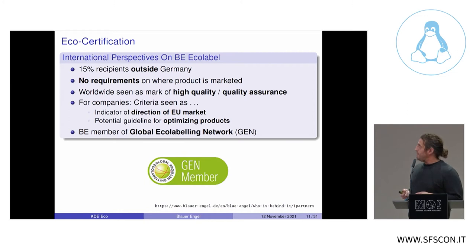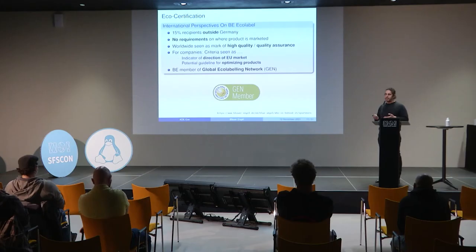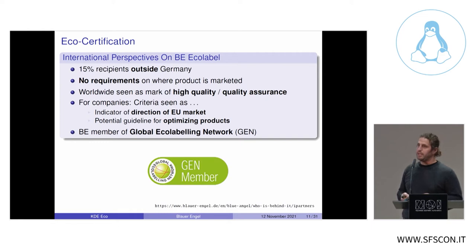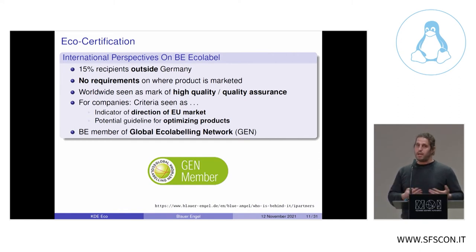From an international perspective, 15% of recipients are outside Germany. It's a German government-backed eco-label, but with international recipients and no requirements on where a labeled product can be marketed. Worldwide it's seen as a mark of quality — for example, companies building in other countries may choose Blauer Engel products for assurance of environmental friendliness and higher quality. For companies, the award criteria are seen as indicators of EU market direction and a guideline for optimizing their own products. Blauer Engel is also a member of the Global Ecolabeling Network, an international cooperation to define common core criteria for eco-labels across borders.